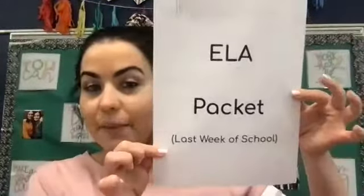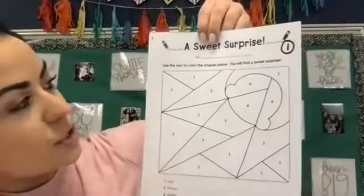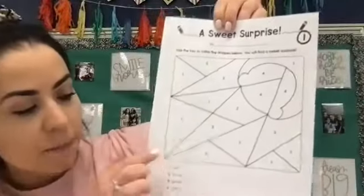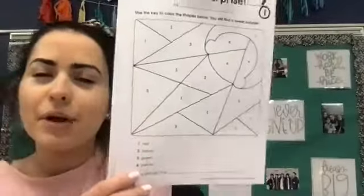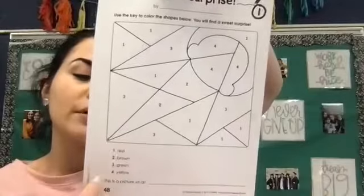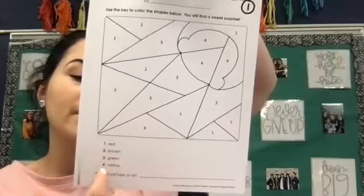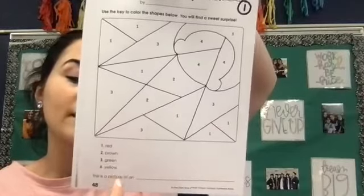I'm going to explain those to you right now. The next pages you are going to complete out of this packet are pages one and two of your ELA last week of school packet. Page one is called 'A Sweet Surprise.' At the top it says 'Use the key to color the shapes below — you will find a sweet surprise.' My recommendation would be crayon, but you could also use marker. Anywhere you see the number one, color it red. Number two, color it brown. Number three, color it green. And anywhere you see the number four, color it yellow.